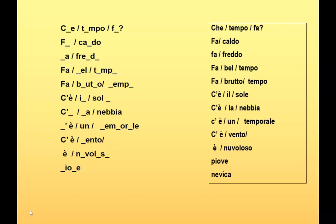Ecco le risposte — here are the answers. Number one: che tempo fa. Numero due: fa caldo. Tre: fa freddo. Quattro: fa bel tempo. Then fa brutto tempo, c'è il sole, c'è la nebbia, c'è un temporale, c'è vento, è nuvoloso, piove, e finalmente nevica.